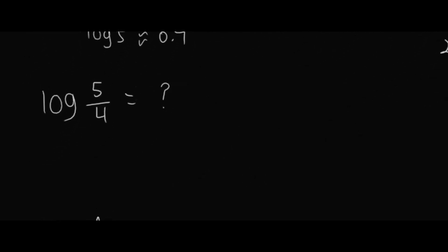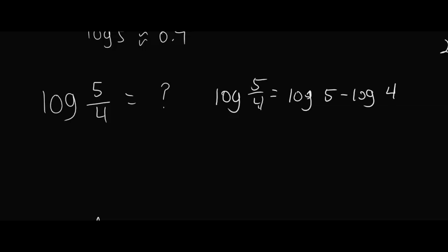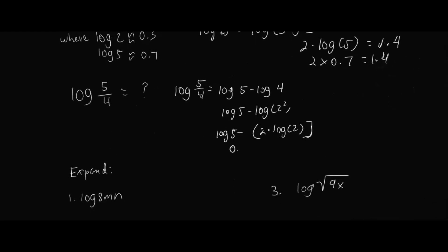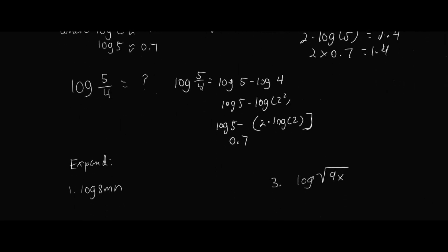Let's move on to log of 5 over 4. We're going to use the quotient rule. Log(5/4) = log 5 minus log 4. Now log 4 can also be written as log(2²), which using the power rule gives 2 times log 2. So we have log 5 minus 2 times log 2, which is 0.7 minus 2 times 0.3 = 0.7 minus 0.6 = 0.1. That's the estimated value.